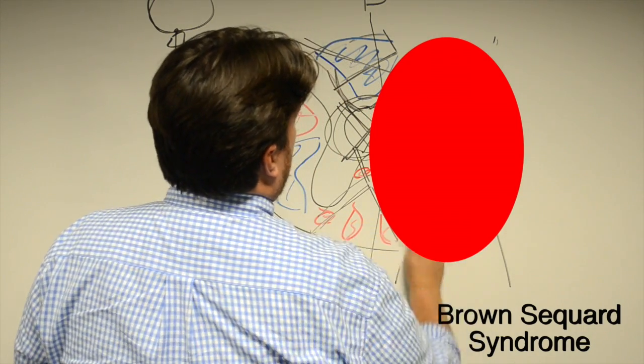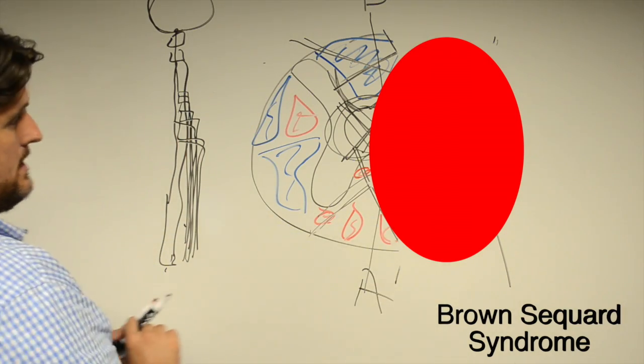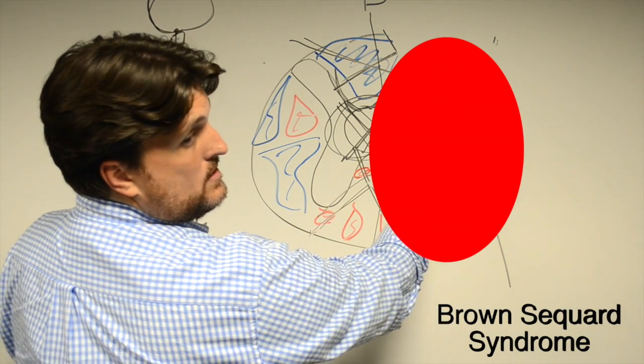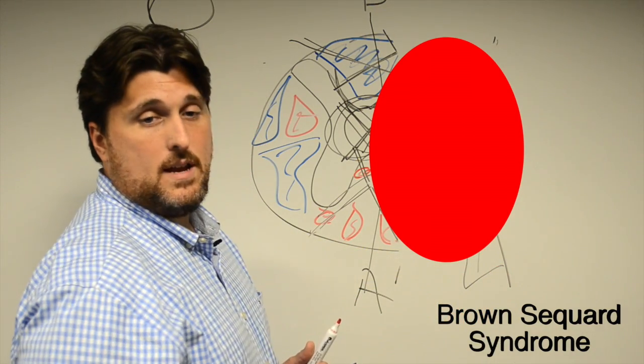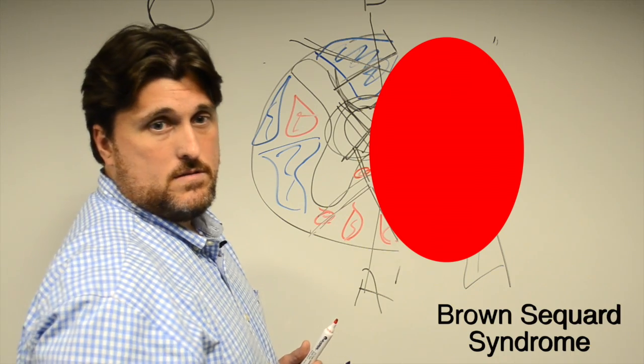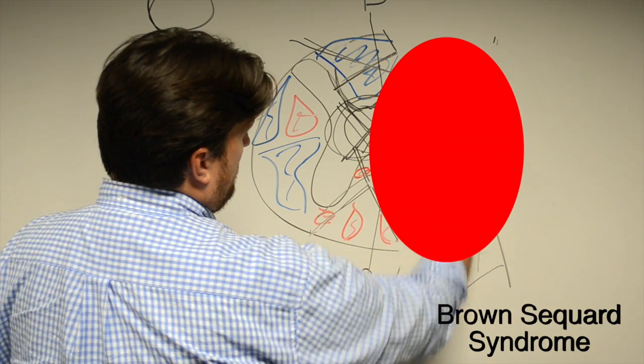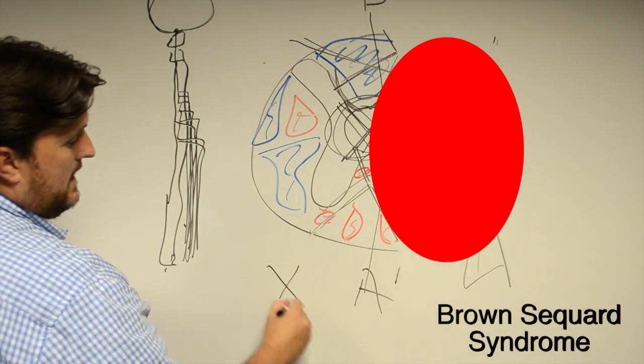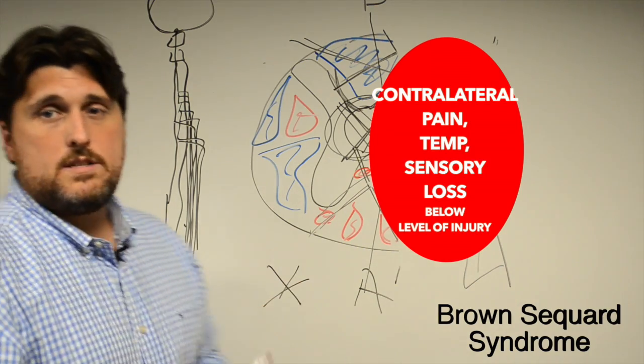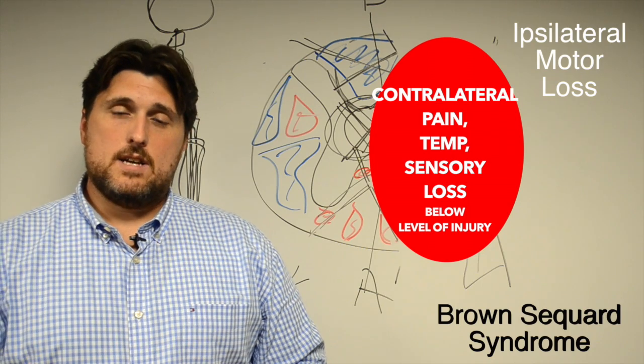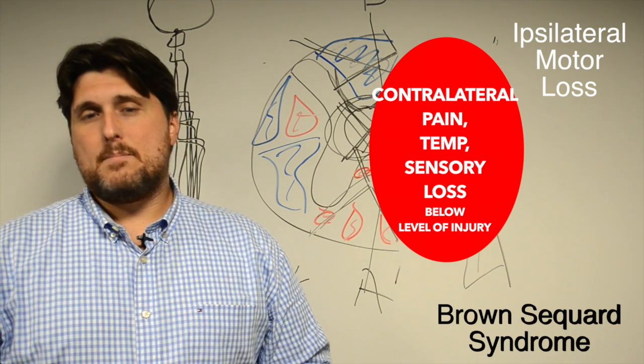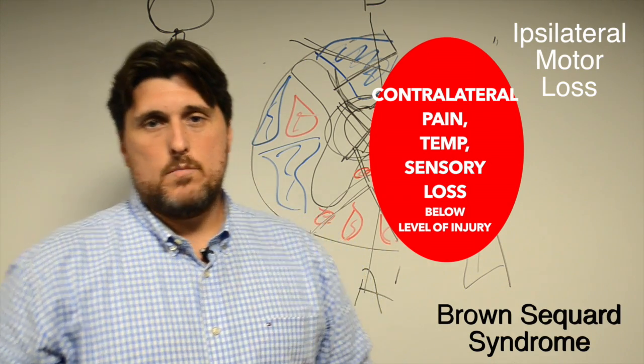The spinothalamic tract is not going to affect, so lack of spinothalamic tract here is not going to affect this side from a pain and sensory and temperature standpoint. However, because it crosses over, it will affect this side. So with Brown-Sequard syndrome, on one side of your body, you will lose pain, sensation, and temperature. On the opposite side of your body, you will lose motor.